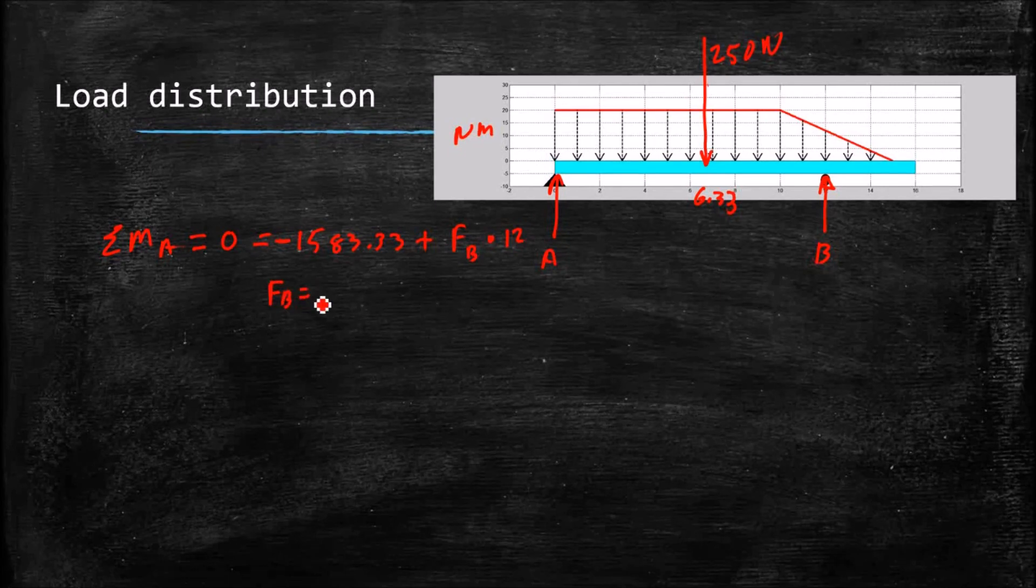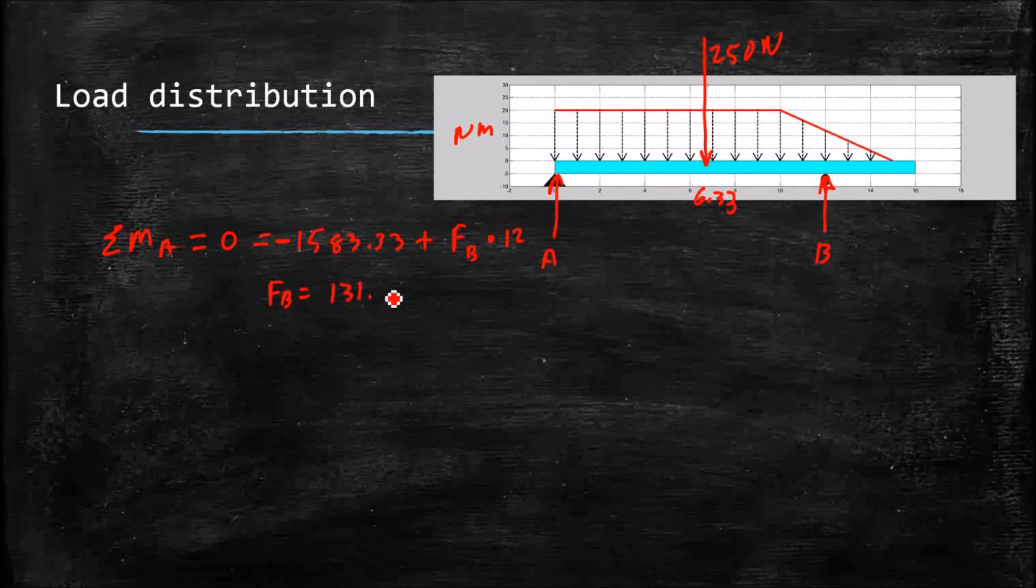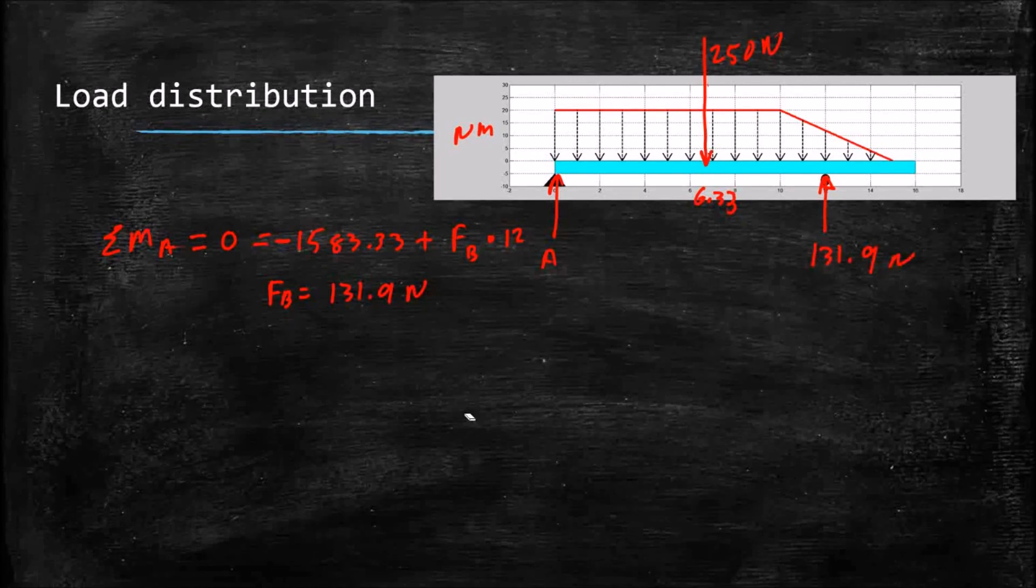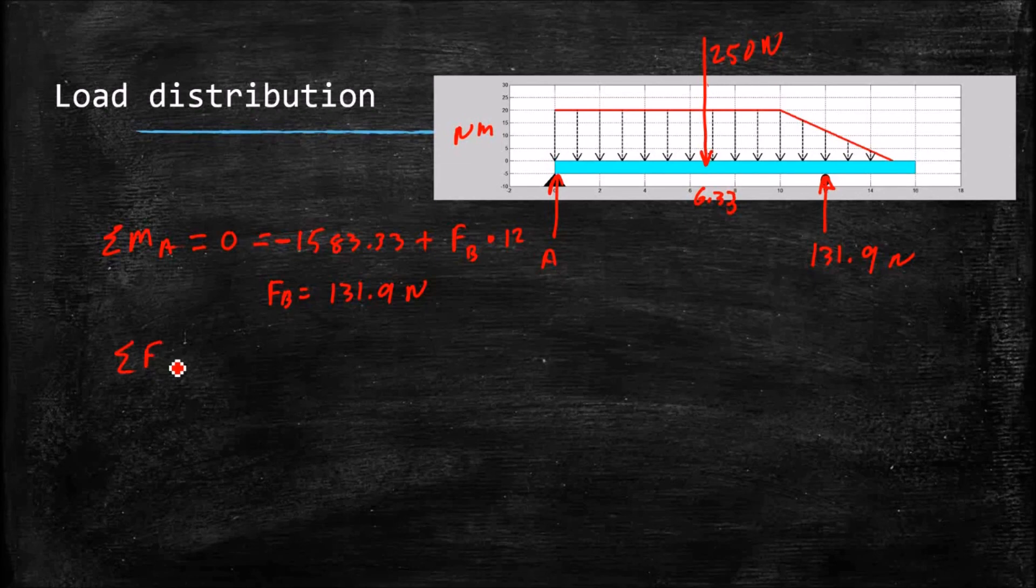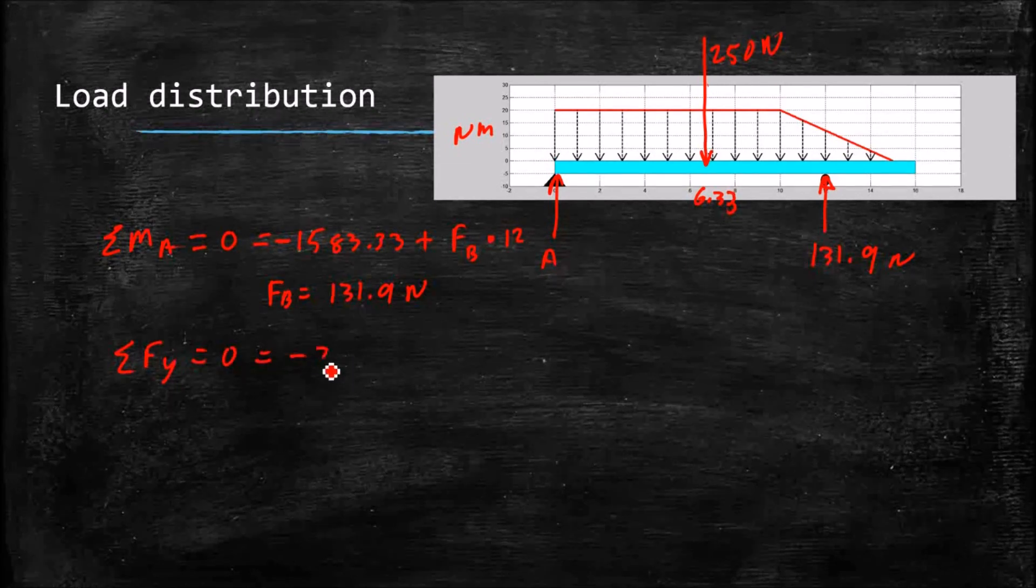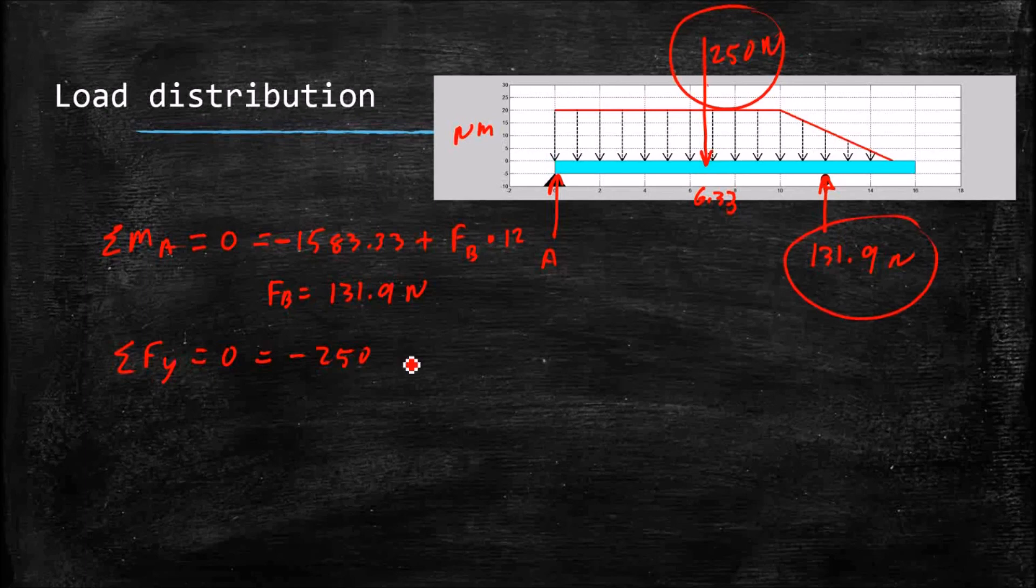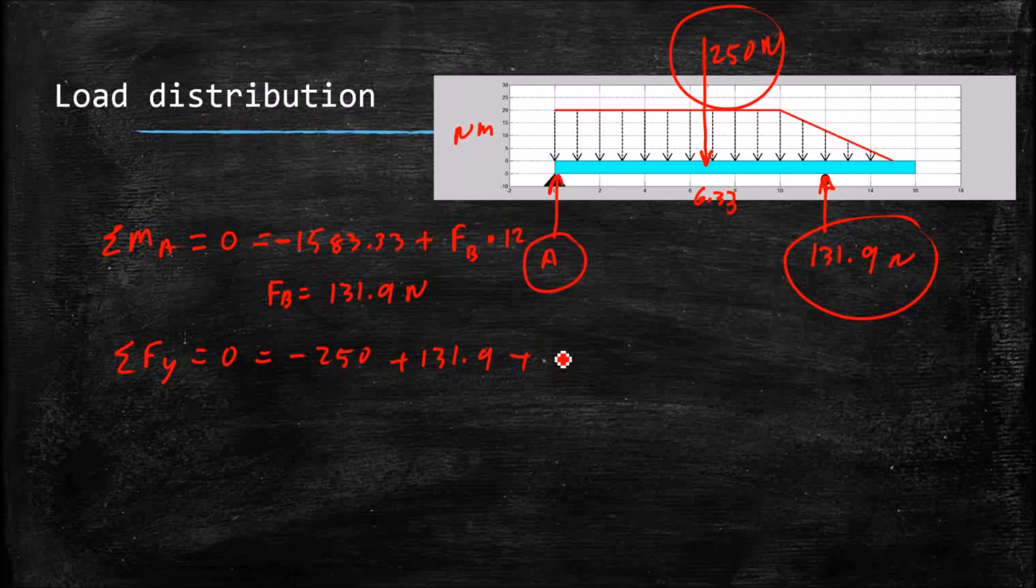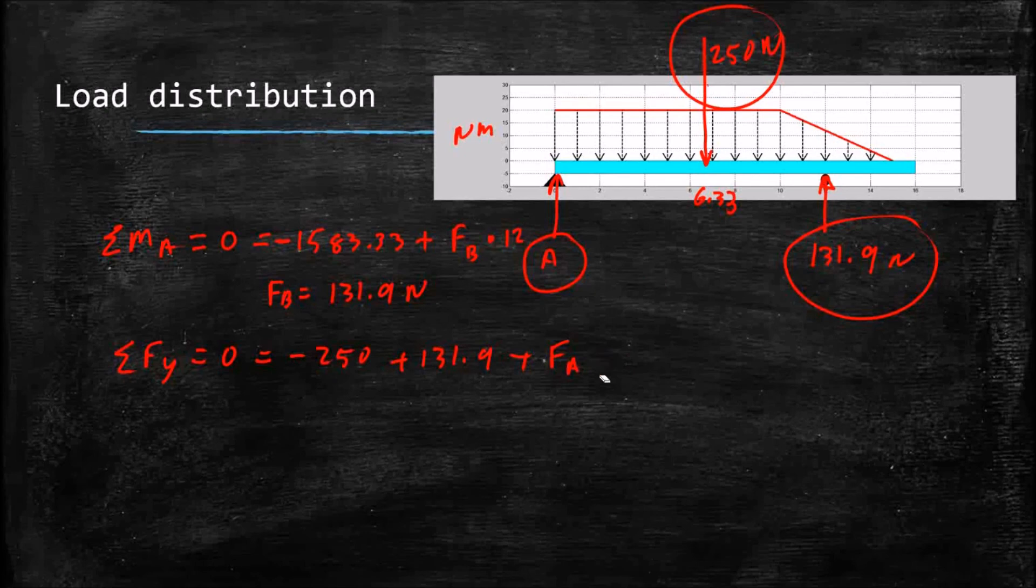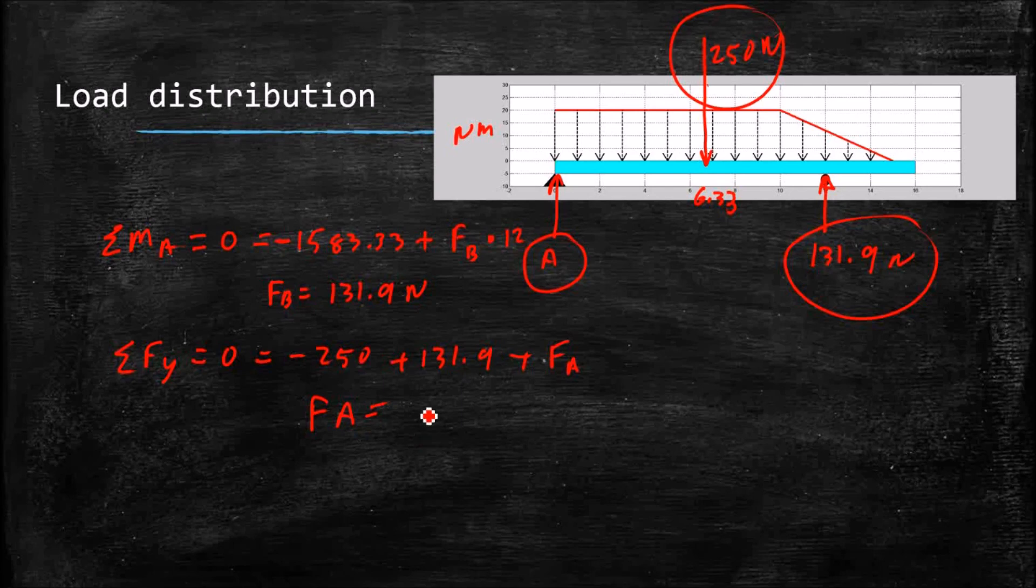So to get the reaction at A, I'm going to do the sum of the forces in the y-direction equals zero, equals, I've got the negative 250 newtons from downward. I've got my reaction at B, plus 131.9, plus the reaction force at A, which we're finding, F A, and that leads me to F A equals 118.1 newtons.